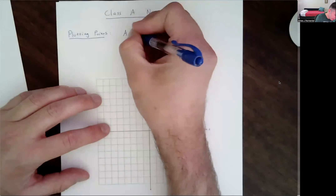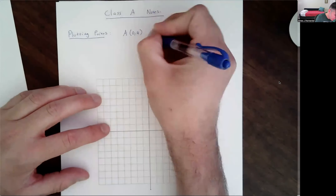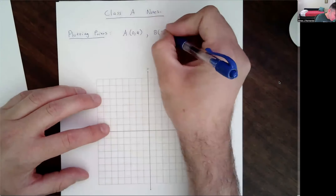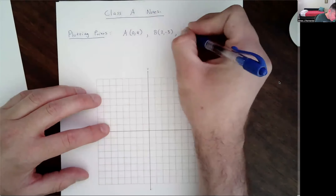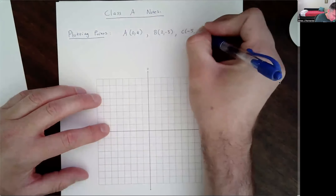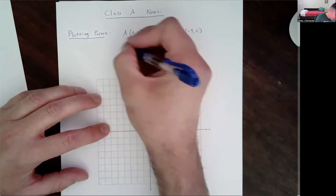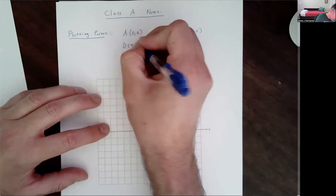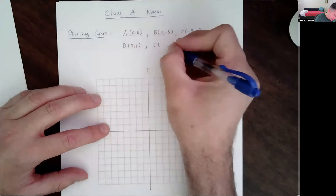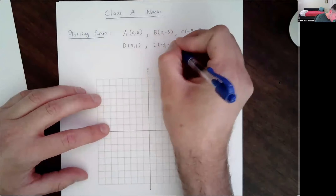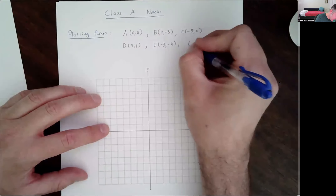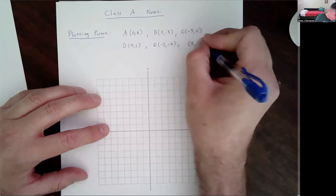The point A, which is (0, 4). The point B, which is (2, -3). The point C, which is (-5, 0). The point D, which is (5, 1). The point E, which is (-3, -4). And one point I'm not going to give a name, just to point out what you do when you don't have one — (4, 2).